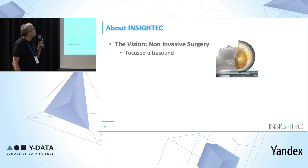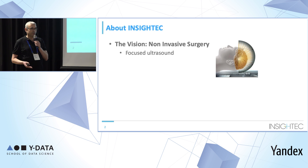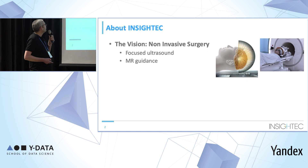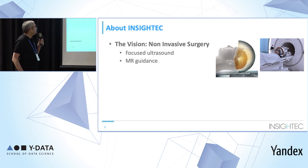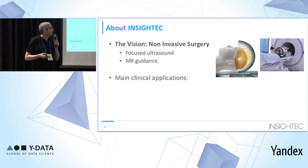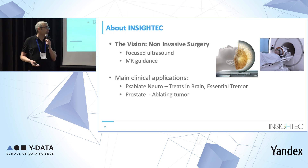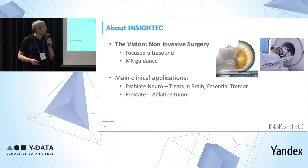This process is guided by MR, which monitors the temperature in the region of the treatment and makes sure we don't harm adjacent regions. The main clinical applications we have currently are the ExAblate Neuro, which treats within the brain, the prostate system, which ablates the cancer tumor of the prostate, and the bone system, which is used for pain palliation by ablating nerves surrounding the bone in bone cancer metastasis.